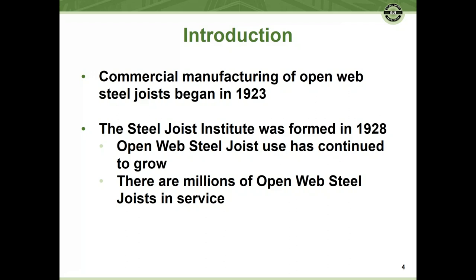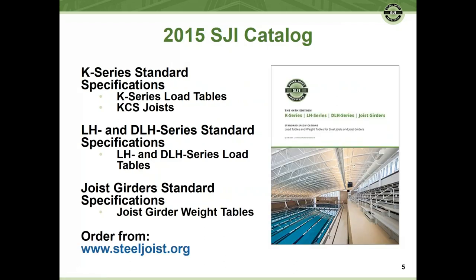Welcome, everyone. We'll be talking about joists. As part of an introduction, commercial manufacturing of joists began in 1923, and the Steel Joist Institute was formed in 1928. There are millions of open-web steel joists in service today, and on occasion, some need to be reviewed, evaluated, and modified. The latest specification was written in 2015 — we call that the unified spec — which includes K-series joists, LH and DLH series joists, and joist girders.